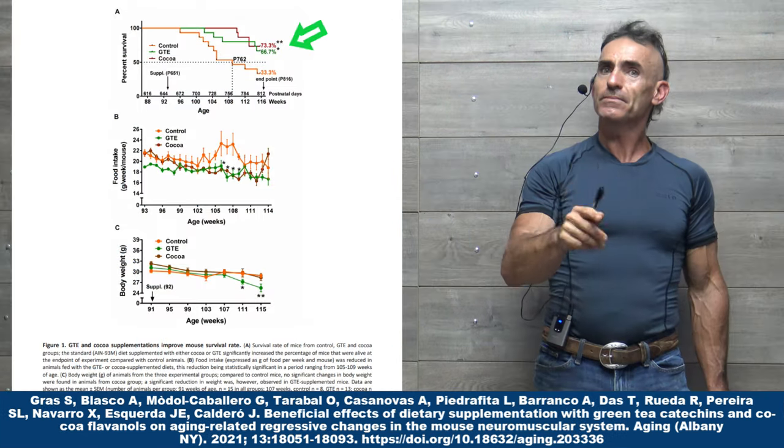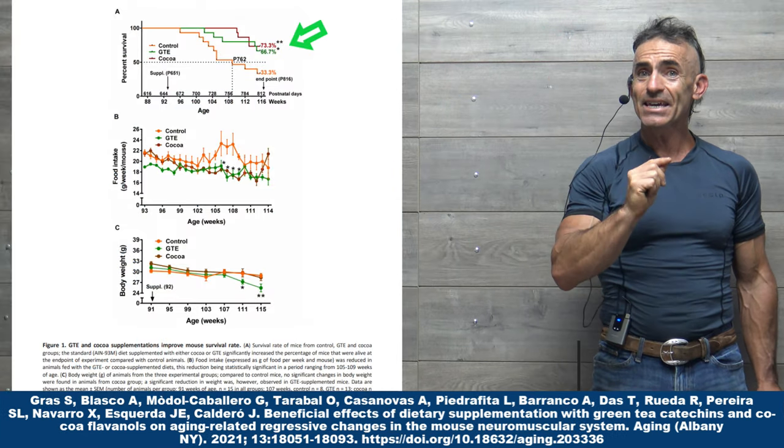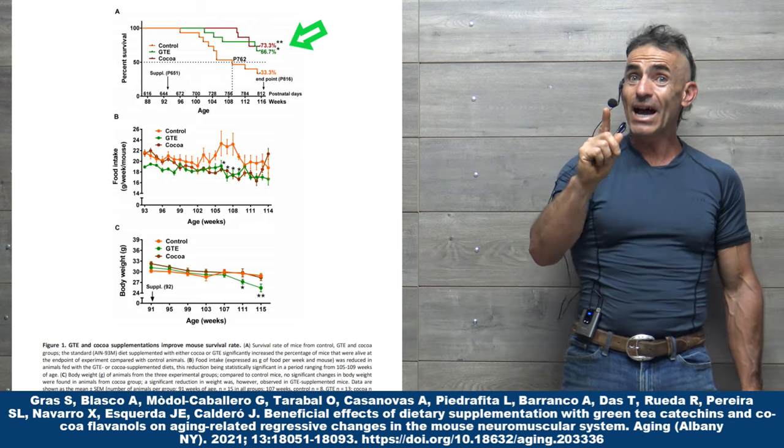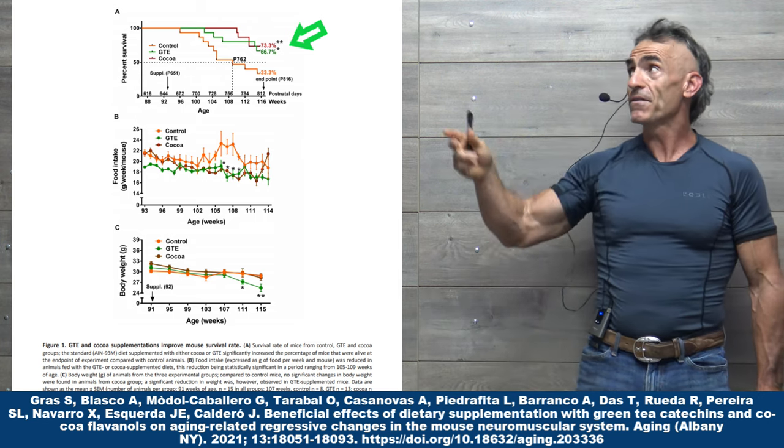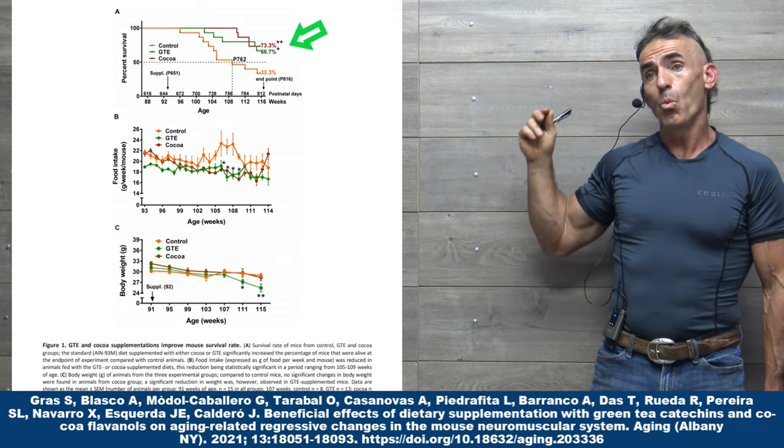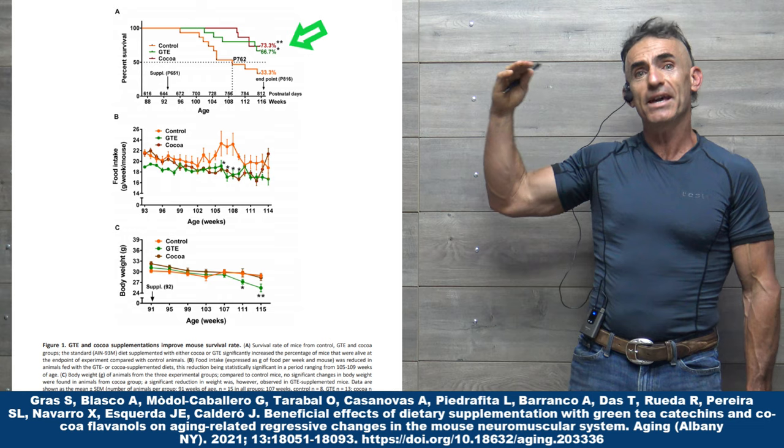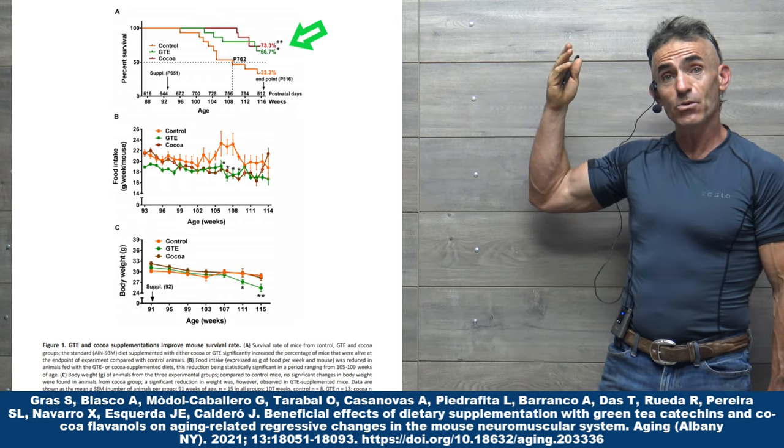You want to see something truly amazing? When this begins to sink in, it's going to appear astounding. Beside the fact of having three controls here, one group of mice consuming feed with green tea catechins added to it, look at the survival rate of that group.